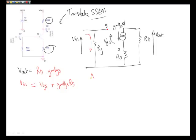So now let's calculate our AV. AV is equal to V out over V in. So let's write out our V out expression, that's here: RD, GM, VGS, all divided by these two terms, VGS plus GMVGSRS.